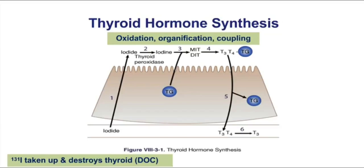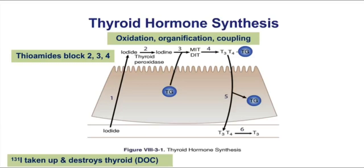We have a group of drugs called thioamides. The most common one is propylthiouracil, but we'll also discuss methimazole. These drugs block multiple steps in thyroid hormone synthesis, including blocking the enzyme thyroid peroxidase. Once we release thyroid hormones into the blood, we release T3 and T4, but we convert T4 to its active form T3 by the enzyme 5'-diiodinase. That enzyme is blocked by propranolol, the beta blocker, and propylthiouracil.